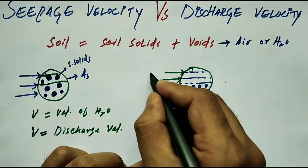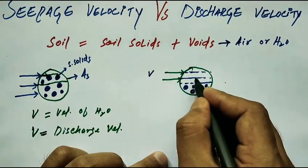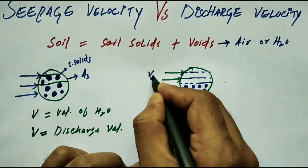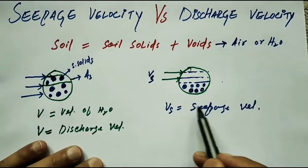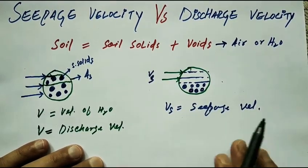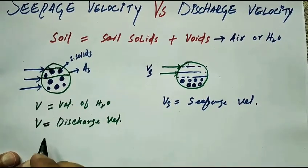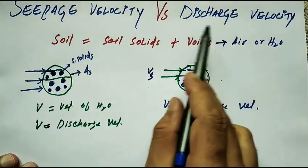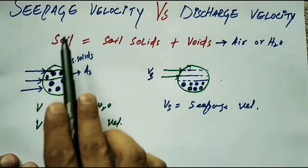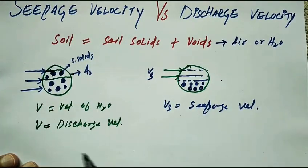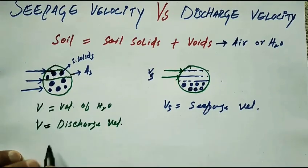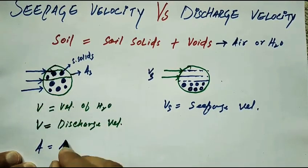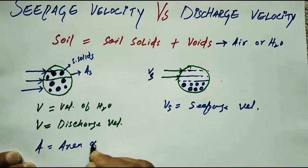In the actual soil sample, velocity is reduced due to the presence of soil solids. The velocity with which water flows through the voids only is called seepage velocity, represented as Vs. Now, A is the area of the soil specimen and A_V is the area of the voids. These terms are very important.